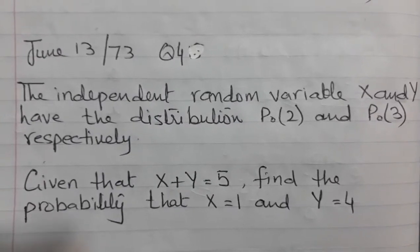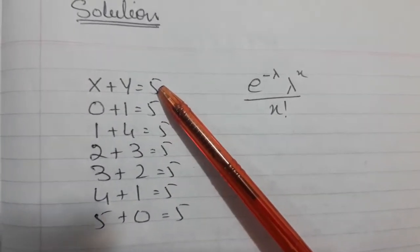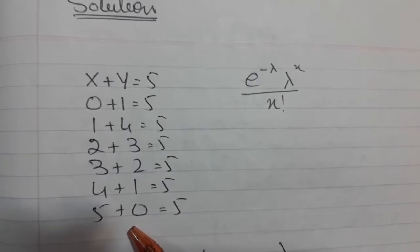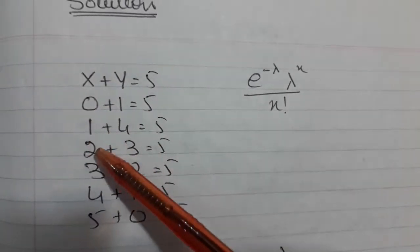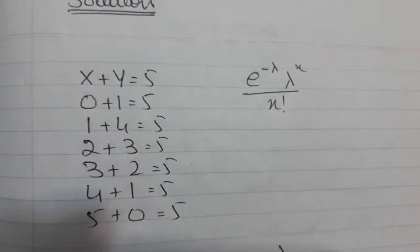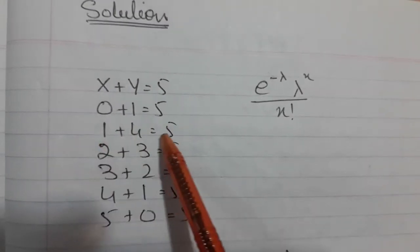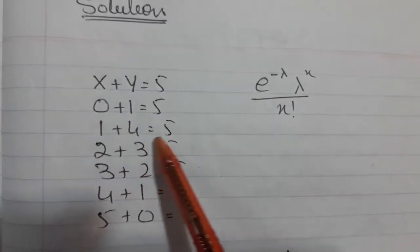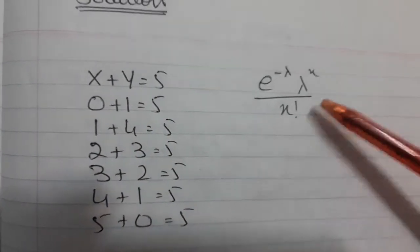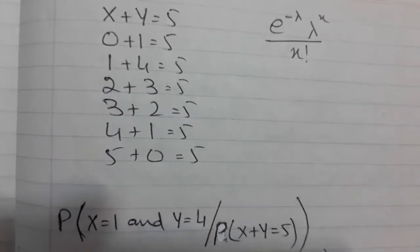To solve this, list all the integer combinations of X and Y that sum to 5: X can be 0, 1, 2, 3, 4, 5 with Y being 5, 4, 3, 2, 1, 0 respectively. The specific case X equals 1 and Y equals 4 goes in the numerator; the probabilities of all cases go in the denominator. We use the Poisson probability formula for each case. Lambda for X is 2 and lambda for Y is 3, so let's work through each case.